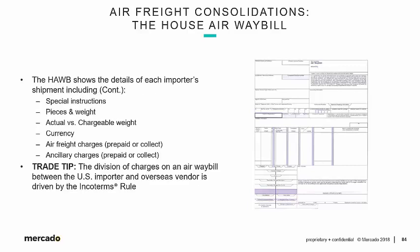Continuing on with the content of a House Airway Bill: any special instructions go in the middle of the body of the airway bill. Pieces and weight — number of cartons and the total weight. Actual versus chargeable weight — that dense versus voluminous cargo calculation, just like we saw for LCL and ocean freight. What is the currency for the charges? What are those charges, and are they prepaid or collect? And any ancillary charges — additional charges above and beyond the base air freight rate.